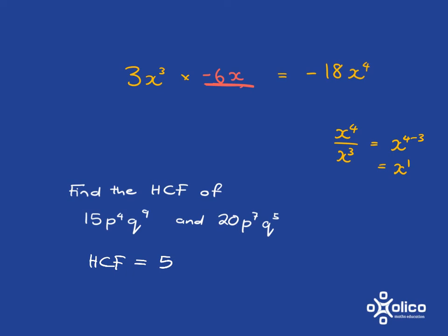Then if we've got p to the 4 and p to the 7, the highest, the greatest thing that can divide into both of those will be p to the 4. Because you can't make it any more than 4 p's because it wouldn't go into p to the 4. And p to the 4 divides into p to the 7 with no problem. What's the highest common factor of q to the 9 and q to the 5? Well, hopefully that's obvious to you. It's q to the 5.